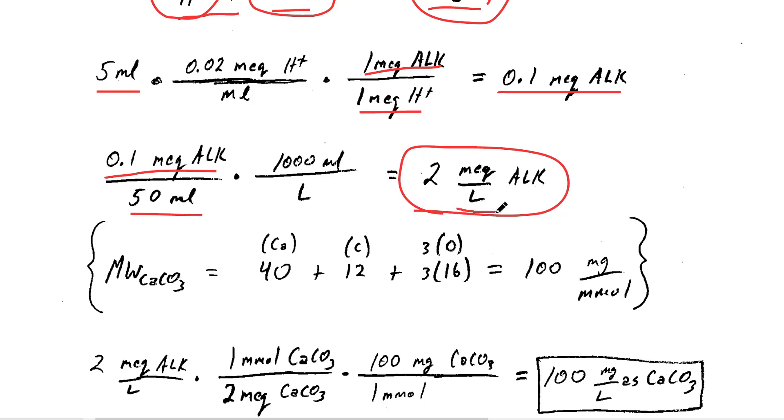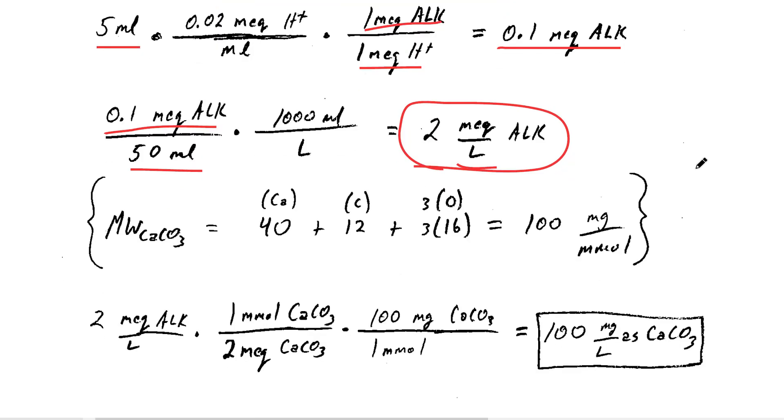Milliequivalents per liter is good and a lot of chemists would like that, but we'd like to get it to calcium carbonate units. We take into account the molecular weight of calcium carbonate, which is 40 for the calcium plus 12 for the carbon plus three times 16 for the three oxygens, and it is conveniently 100 milligrams per millimole.